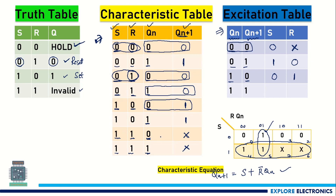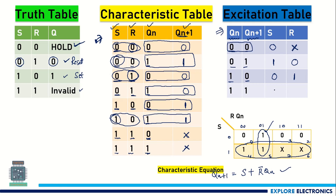For Qn=1 → Qn+1=1: this occurs for SR=00 (S=0, R=0) and SR=10 (S=1, R=0). Since R=0 in both cases, R=0; and since S differs (0 and 1), S=X (don't care). This completes the excitation table for the SR flip-flop: Qn=0→0: S=0, R=X; Qn=0→1: S=1, R=0; Qn=1→0: S=0, R=1; Qn=1→1: S=X, R=0.